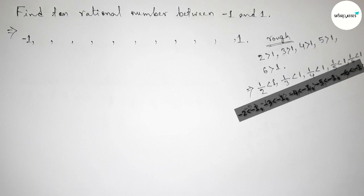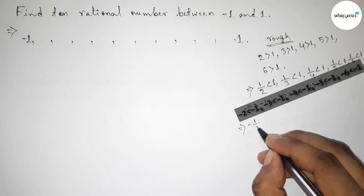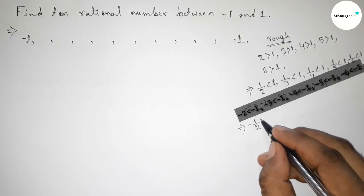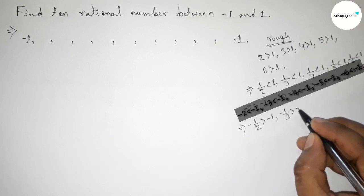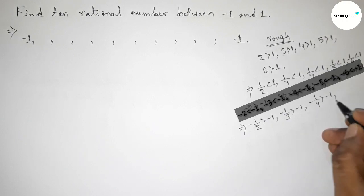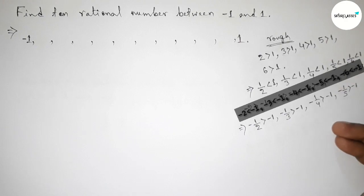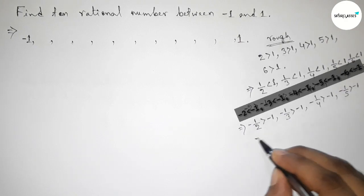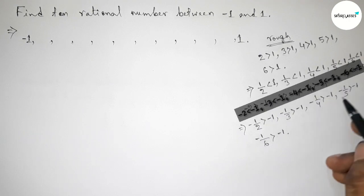Now by the same method, taking the inverse of all these negative numbers. Inverse of minus 2 is minus 1/2, which is always greater than minus 1. Minus 1/3 is greater than minus 1. Minus 1/4 is greater than minus 1. Minus 1/5 is greater than minus 1. And inverse of minus 6 is minus 1/6, greater than minus 1. So these are our 10 rational numbers between minus 1 and 1.